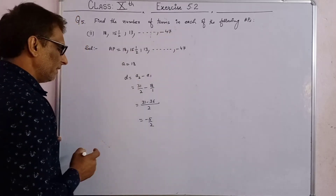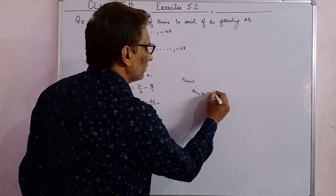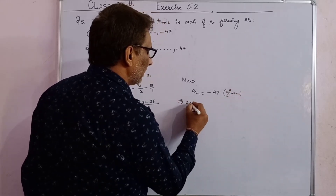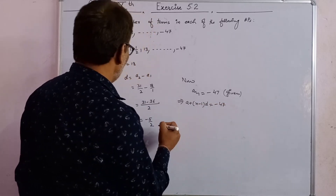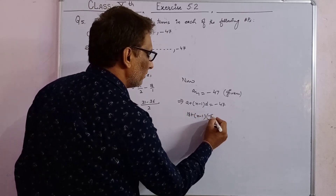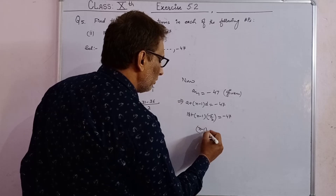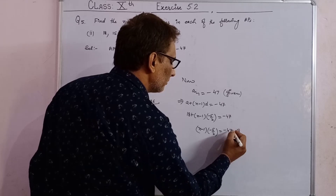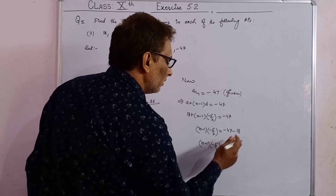The last term is given as An equals minus 47. Using the formula: a plus (n minus 1) into d equals minus 47. Substituting: 18 plus (n minus 1) into (minus 5 upon 2) equals minus 47. So (n minus 1) into (minus 5 upon 2) equals minus 47 minus 18, which equals minus 65.